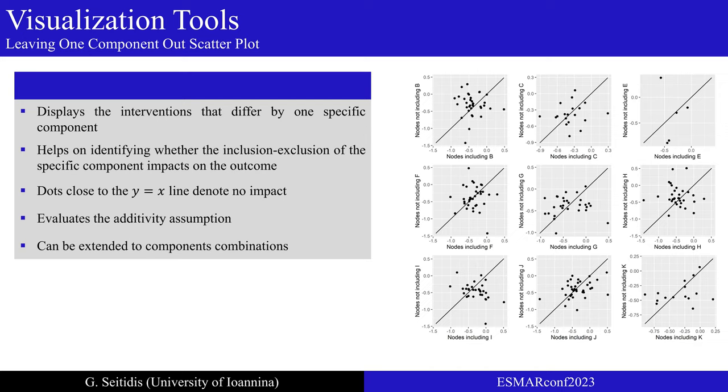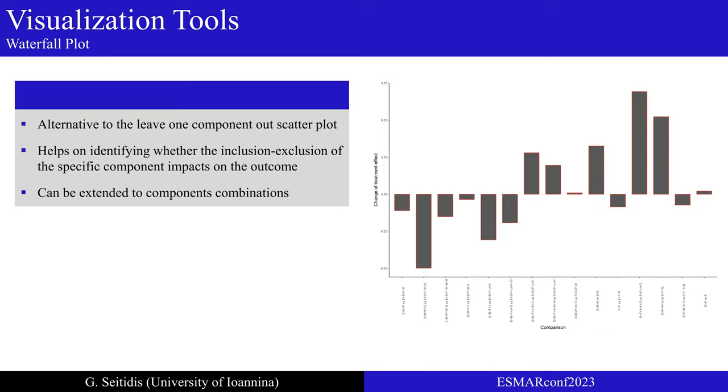For a better understanding of the NMA results, it is recommended to apply the leave one component out scatter plot for each component. This tool can also be extended to interventions that differ by a specific component combination, and adjust it to use Z values instead of relative effects. An alternative to the leave one component out scatter plot is the waterfall plot, which also displays the interventions that differ by one specific component. The differences in the relative effects of the interventions with and without a specific component are displayed, in order to explore if the extra component has a positive or negative impact on the outcome. The direction of the impact, positive or negative, depends on the outcome's nature, beneficial or harmful.